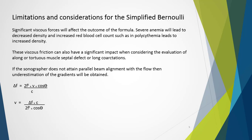Significant viscous forces will affect the outcome of the formula. While viscous friction is considered negligible in the simplified equation, in cases where blood density changes we should be wary. Severe anemia leads to decreased density, while increased red blood cell count in polycythemia leads to increased density. The error from this can be significant — on the order of about 20%. Viscous friction can also have significant impact when evaluating tortuous muscular septal defects or long coarctations, where significant energy is lost through the obstruction, leading to underestimation of the true gradient.